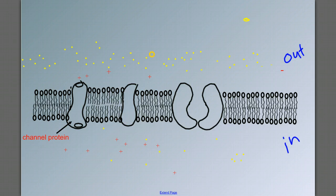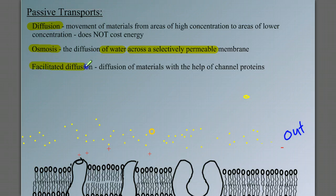Now they're being helped by a protein. However, it's still passive. And we call it facilitated diffusion. It's the diffusion of materials with the help of channel proteins. It's still moving down the concentration gradient, so it's still passive.